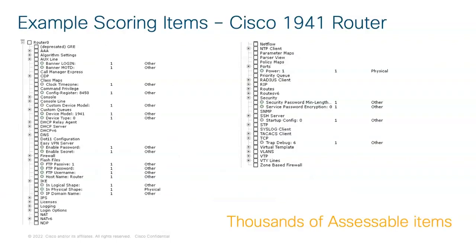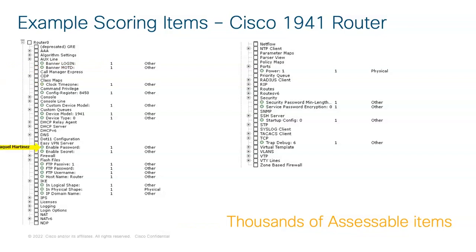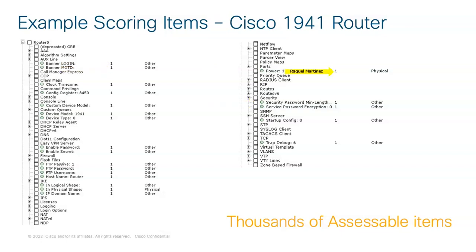Here's an example of assessable items. There are thousands of assessable items — some switches have more than a thousand items that can be scored. To give some general ideas: things like the login banner and message of the day can be worth one point; the clock time zone; enable password and secret — one point each. Or configuring FTP with password and username, or port security. You can change the point value — maybe security is really important in your lesson, so you make it three points each.